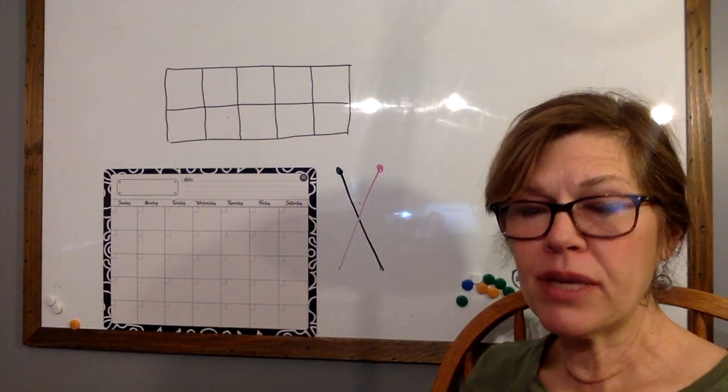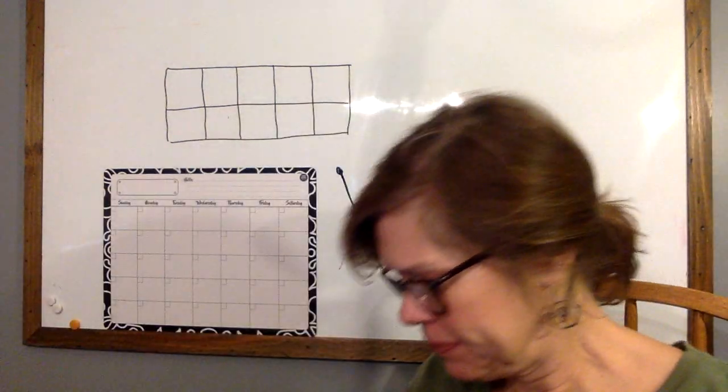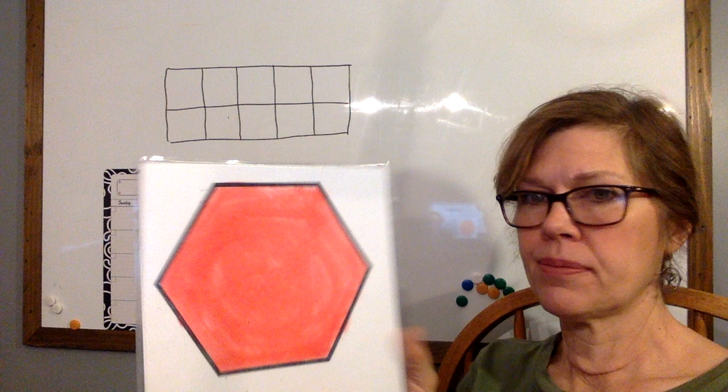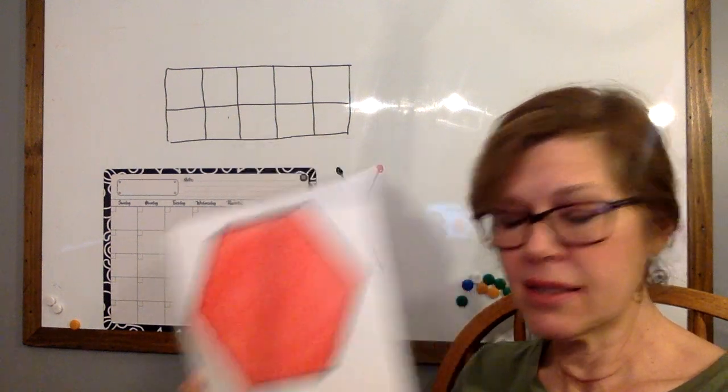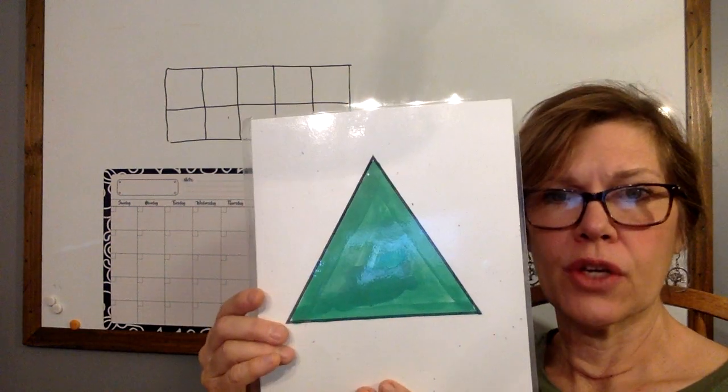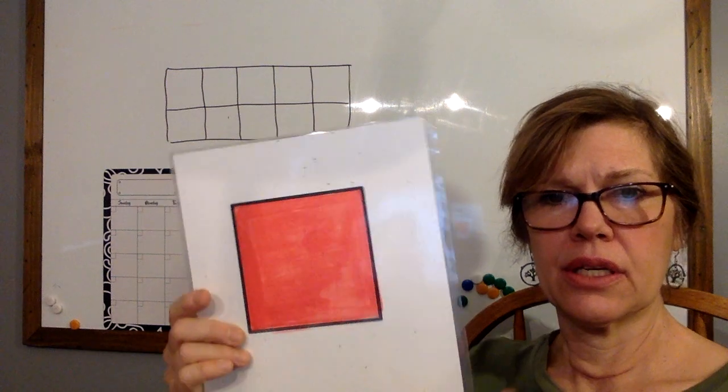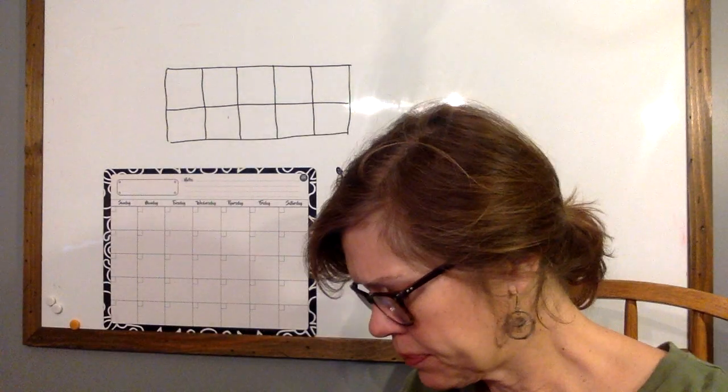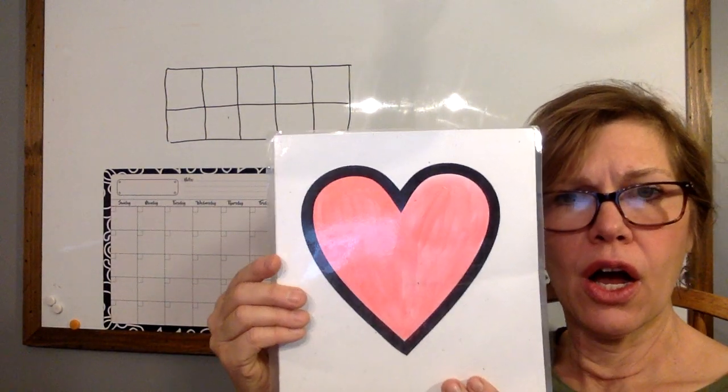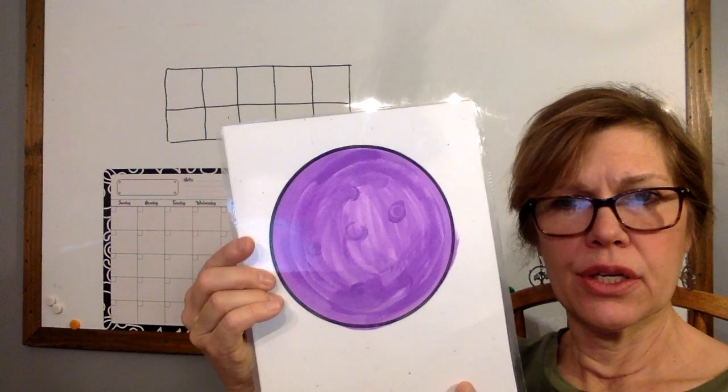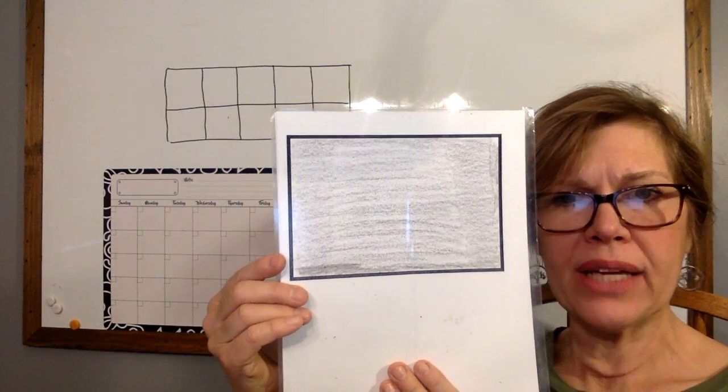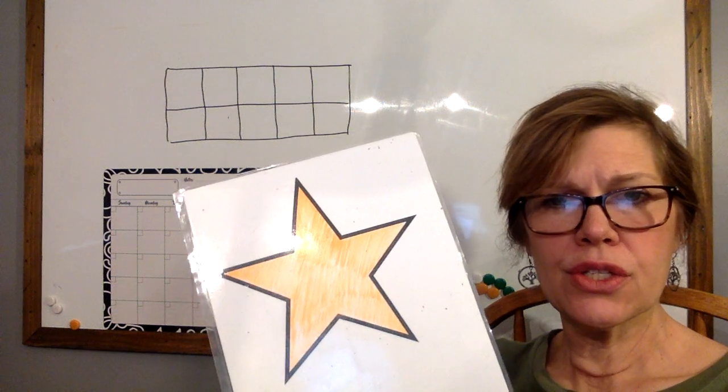Repeat these shapes after me or try to beat me. Diamond or rhombus. Oval. Hexagon. Triangle. Square. Heart. Circle. Rectangle. Star.